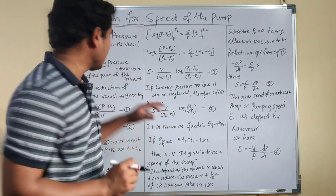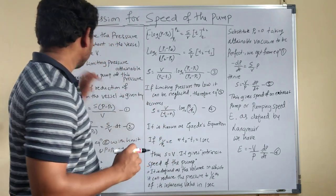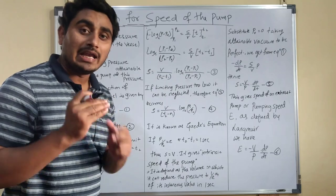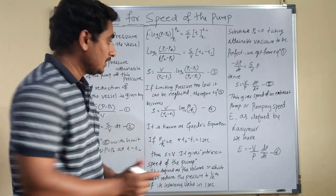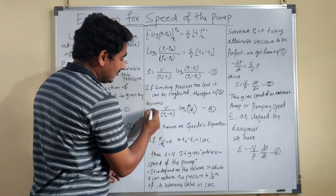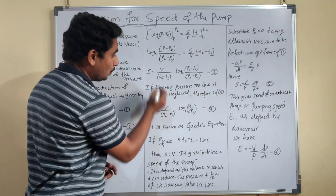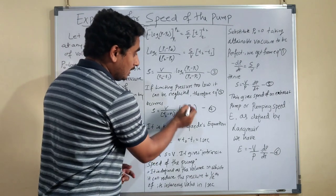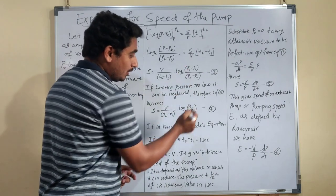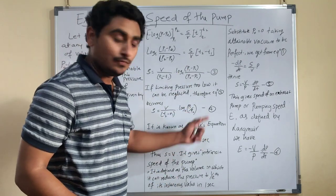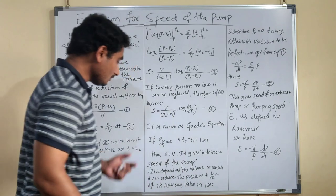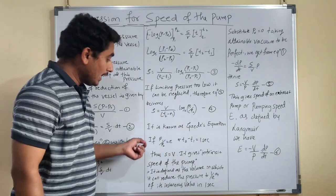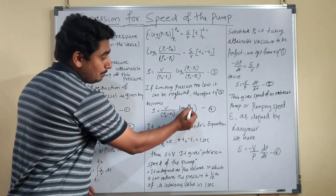If the limiting pressure P0 is very low, we can neglect that term, so equation 3 becomes: S = V/(t2 − t1) · log(P1/P2). This is equation number 4, known as the Gaede equation.